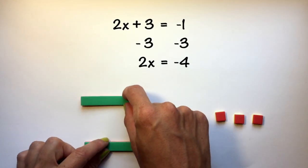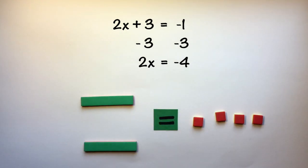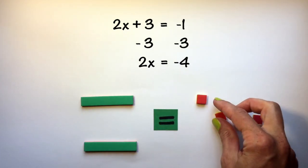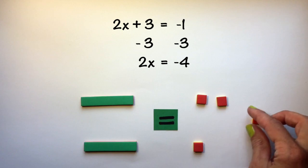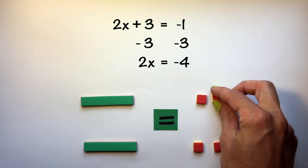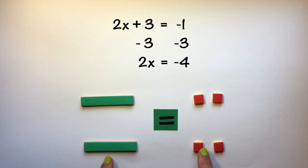To isolate my variable, I'm going to need to split it into two equal groups. So when I split my tiles on the other side of the equation into two equal groups, I am able to see that x is equivalent to negative 2.